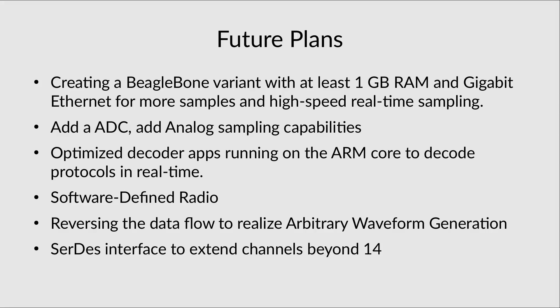Looking at future plans: if I win the best product prize, I plan to create a BeagleBone variant with at least 1 GB of RAM and Gigabit Ethernet for more samples and higher-speed real-time sampling. Using an ADC would add analog sampling capabilities. Optimized decoder applications would allow the ARM core to decode protocols in real-time while the PRUs sample. Software-defined radio is also possible, streaming processed audio over the network. We can also reverse the data flow to realize an arbitrary waveform generator, and use a serial interface to extend channels beyond 14 by trading sample rate for more channels.